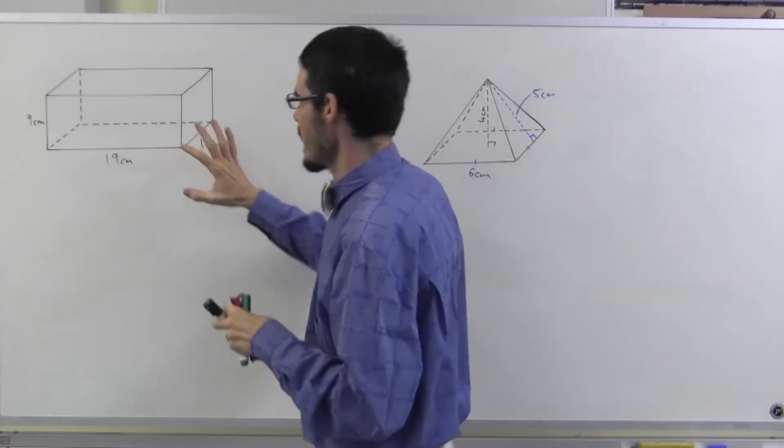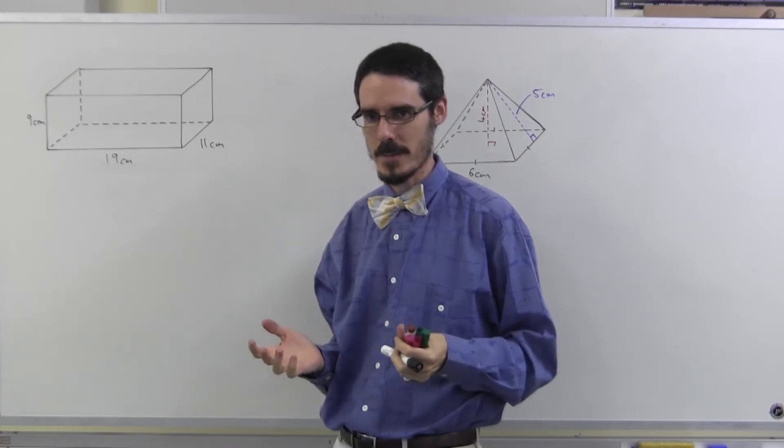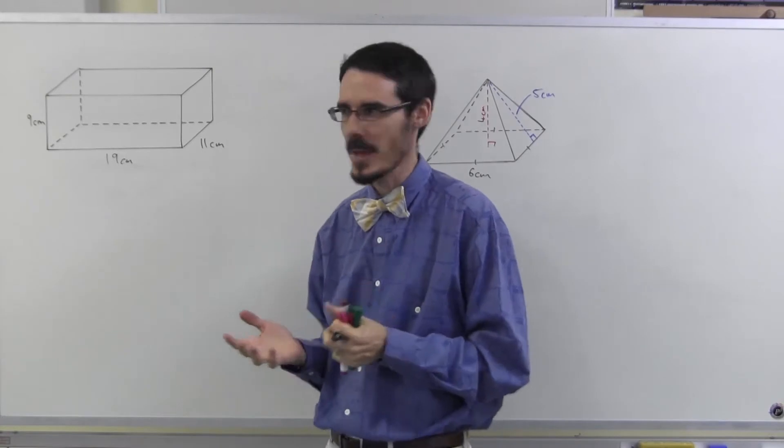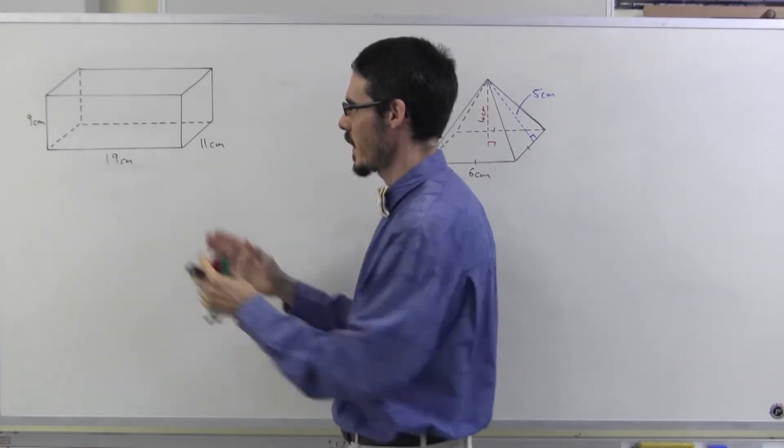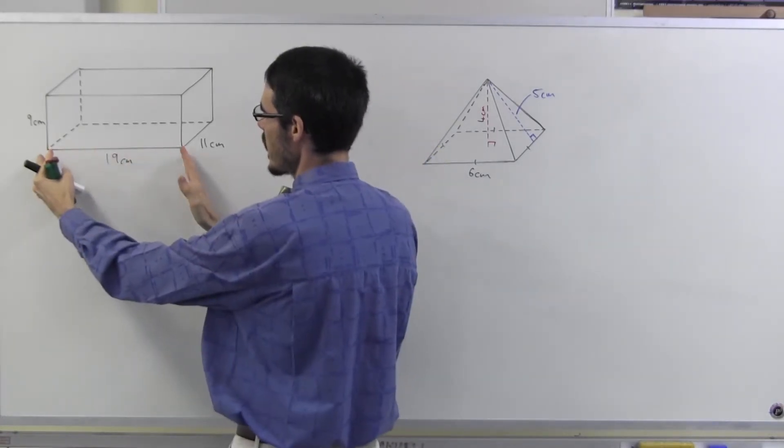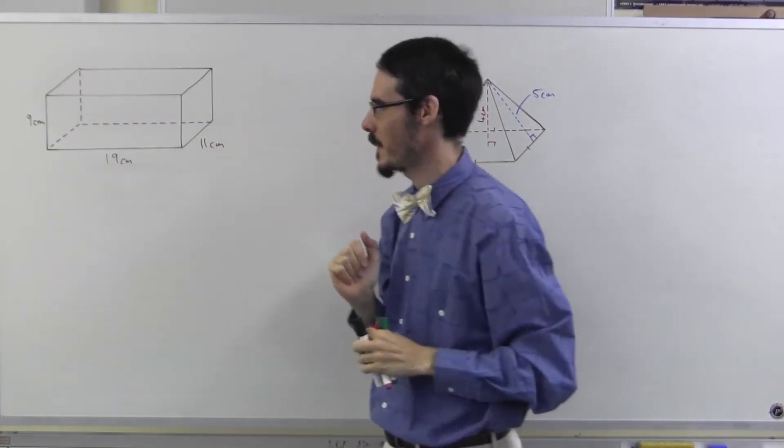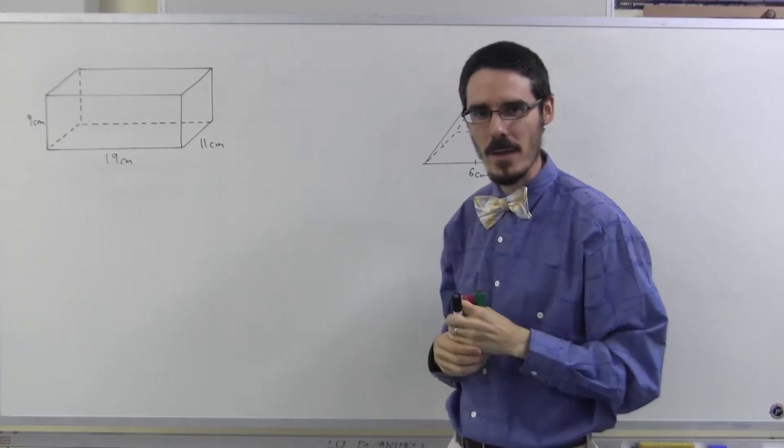So if we have a look at this, it's a rectangular box. I haven't actually marked all the right angles because then it would get a bit messy and confusing. It's a rectangular prism. 19 centimeters long, 9 centimeters high, 11 centimeters deep. I need to work out the surface area.